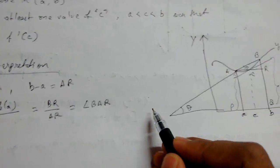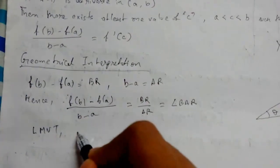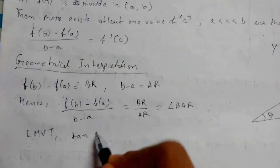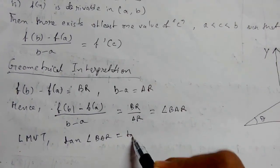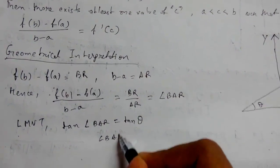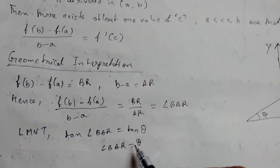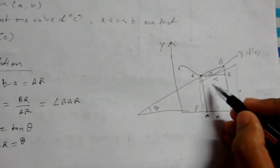tan theta, where theta is a given angle. From LMVT we get that tan of angle BAR is equal to tan theta. So angle BAR is equal to theta. So we can conclude that the tangent at the point c is parallel to AB.